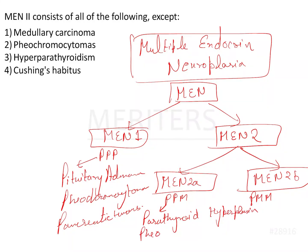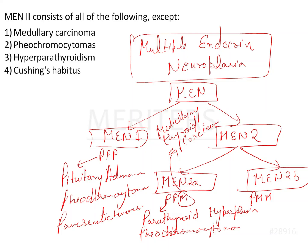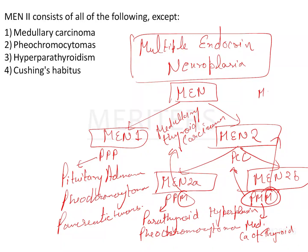In MEN2a, the M stands for medullary thyroid carcinoma. For MEN2b, using the PMM mnemonic: P is pheochromocytoma, the first M is medullary carcinoma of the thyroid, and the second M is morphenoid body habitus.